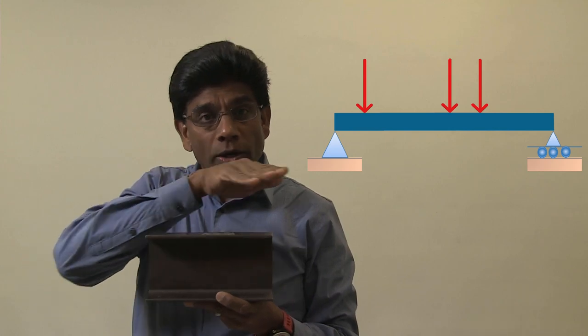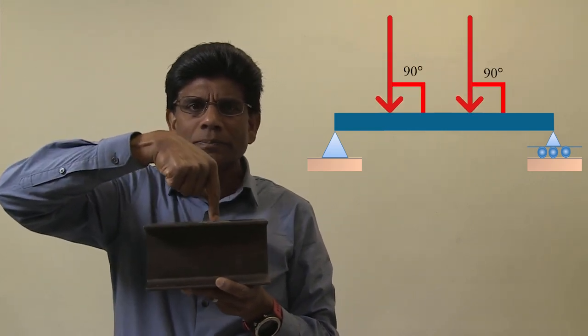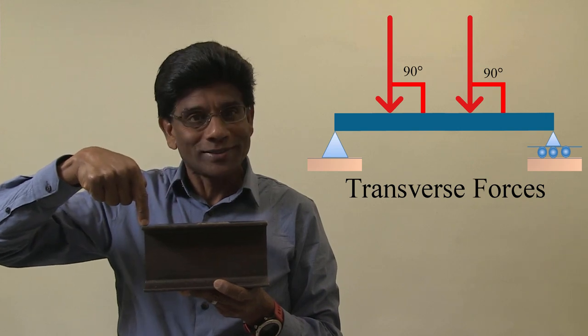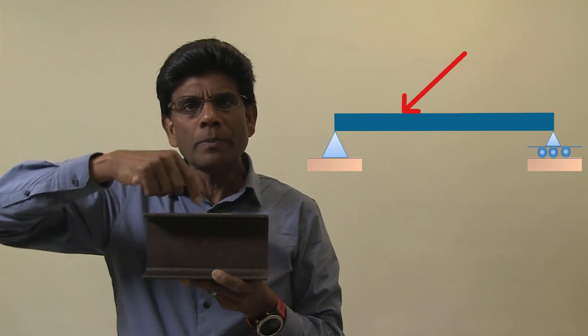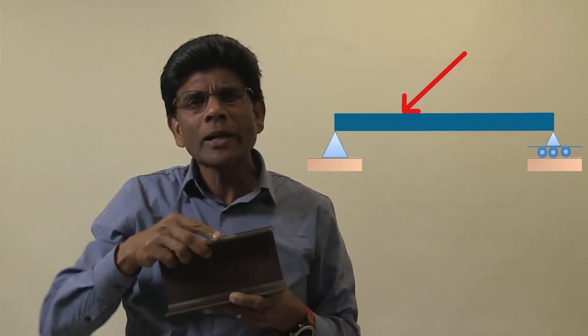Whatever the cross section or the material may be, beams are designed to withstand loads. These loads can be concentrated or distributed. In a typical beam, loads are applied perpendicular to the axis of the beam — these are called transverse forces, and they create shear and bending in the beams. If the loads are not at right angles to the beam, beams will also experience axial forces. The primary concern in the design of beams is finding the maximum shear force and bending moment along the axis of the beam, and that's what we are going to do today. We will learn how to draw the shear force and bending moment diagrams of beams under different loading conditions, step by step.